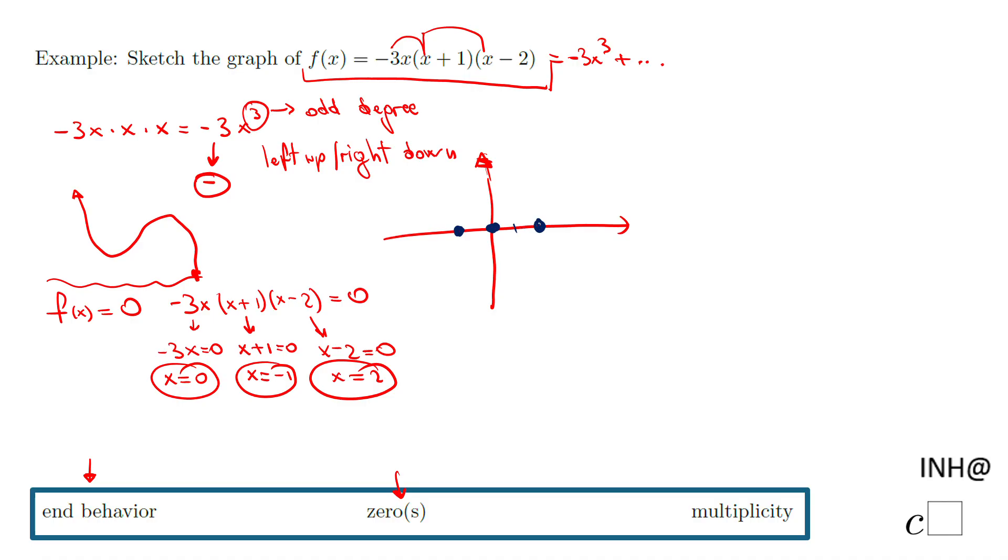These are the zeros, the intercepts. Okay, and now remember we have these patterns, so we can really try to. But we have one more thing here: multiplicity. That is very important.